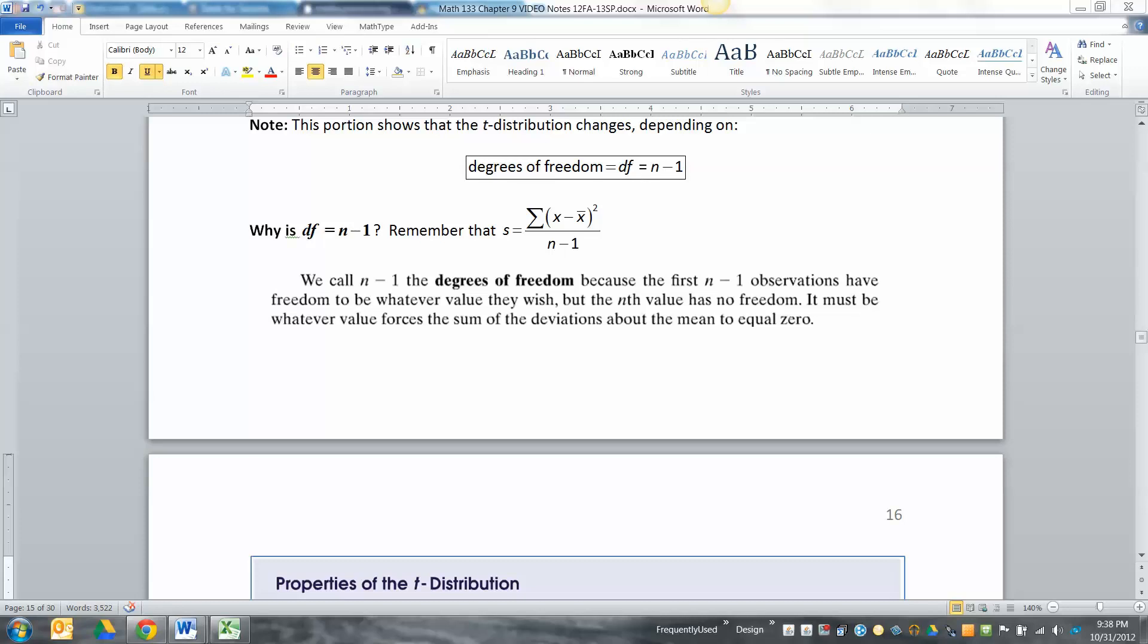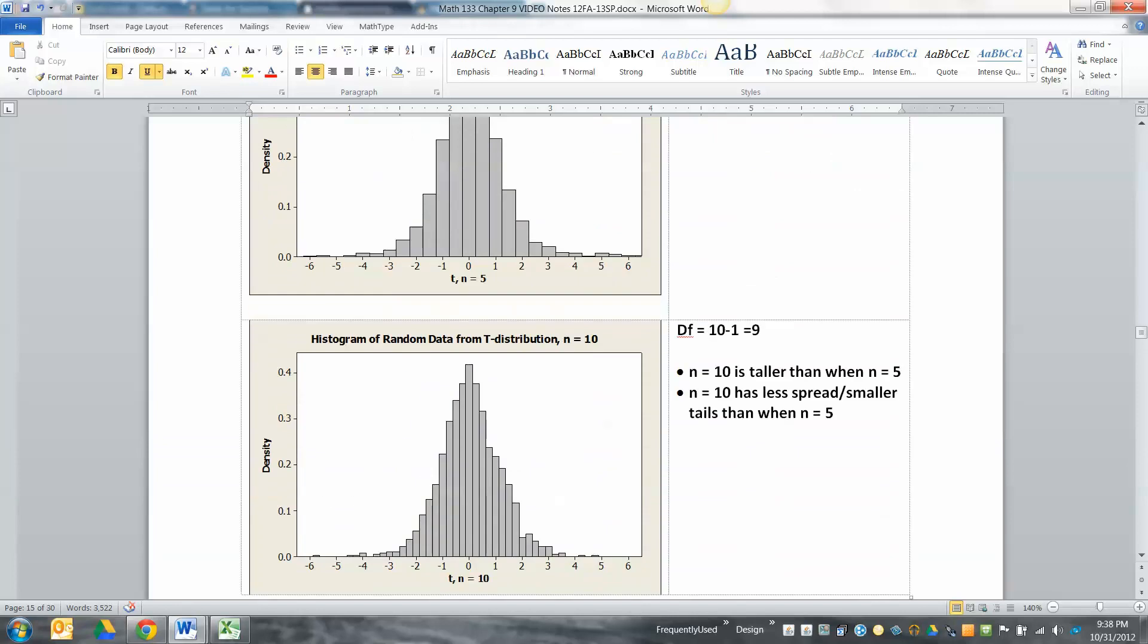So we left off here realizing we were in trouble because if we don't know mu, we don't know sigma. If we don't know sigma, that means we're stuck using s, and s is always going to be a little bit larger than sigma. It's not a perfect estimator of sigma.